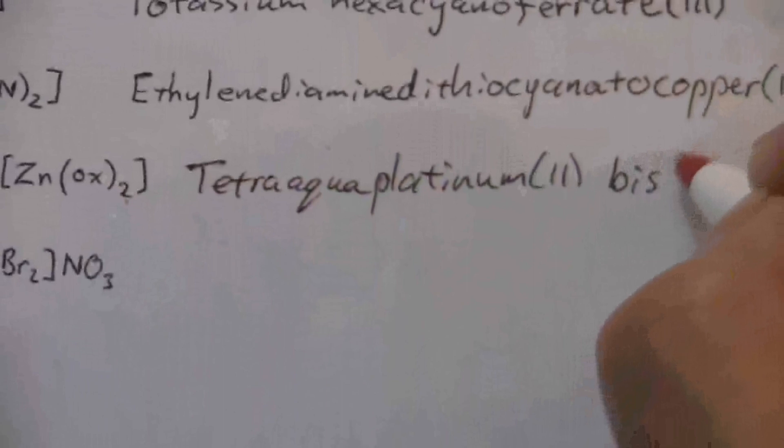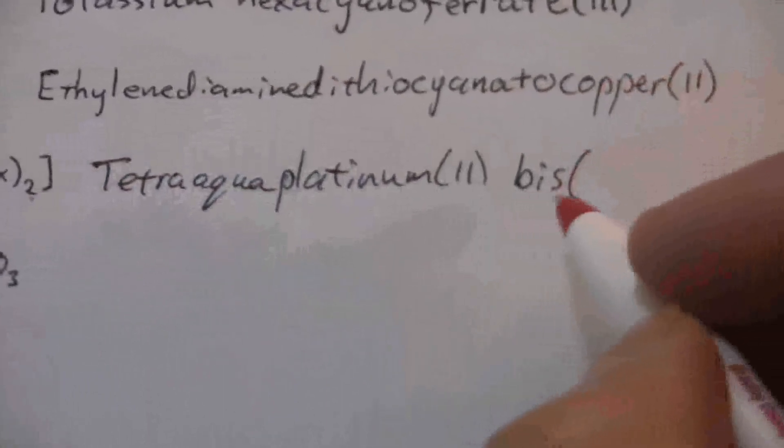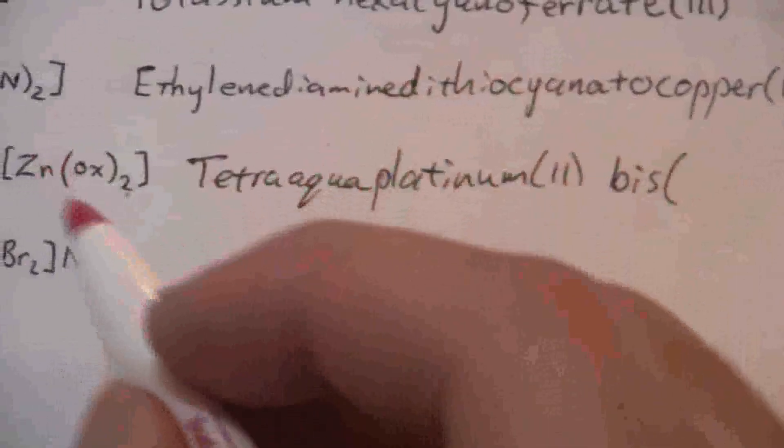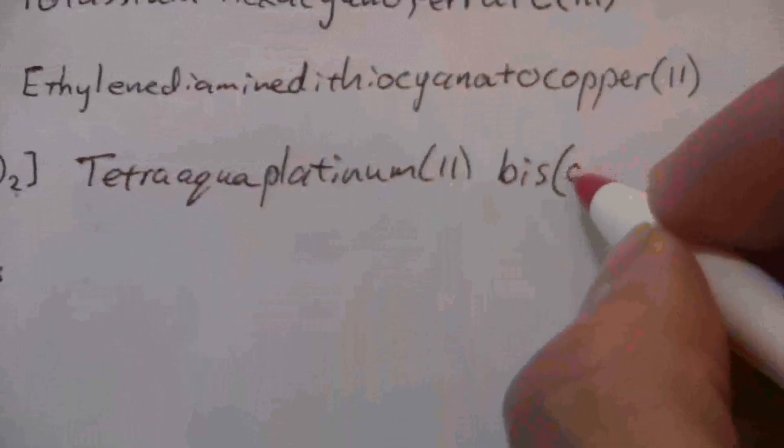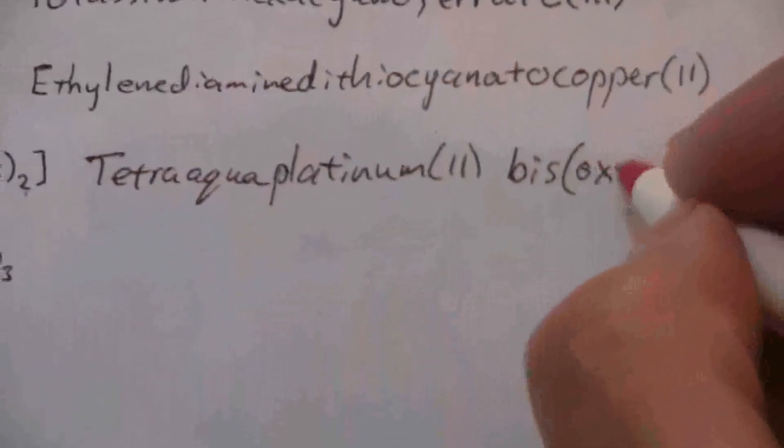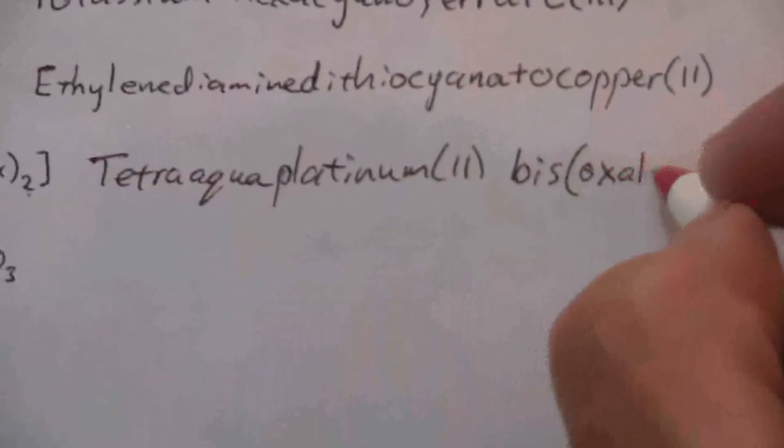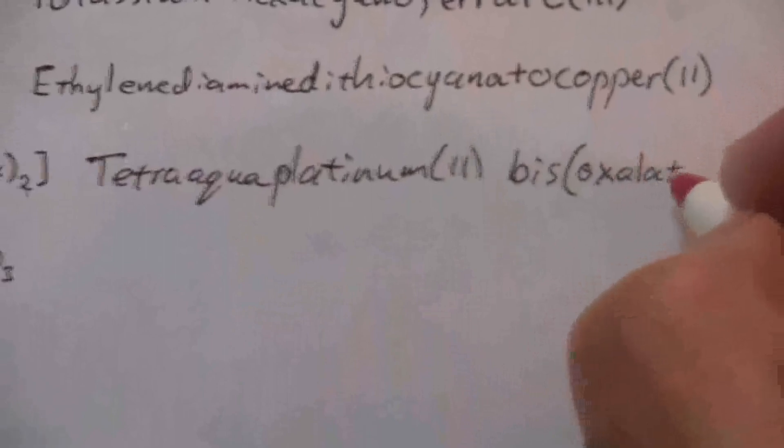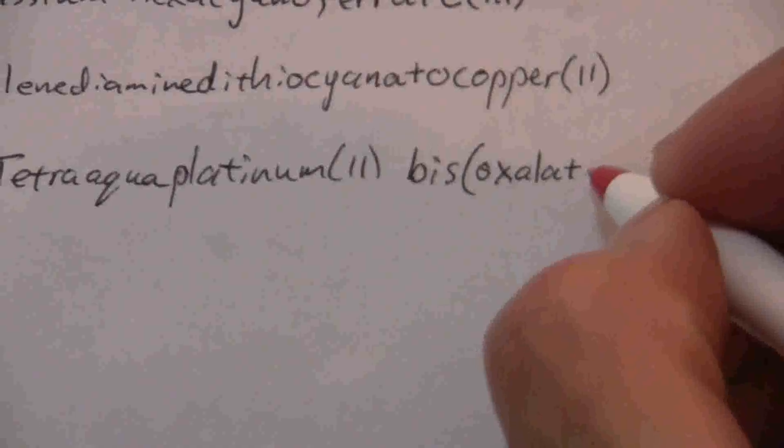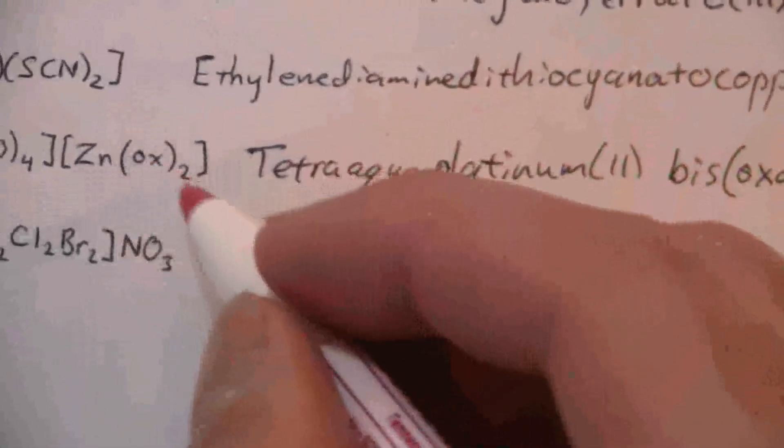So this will be bis, and then in parentheses, whenever we use the altered prefixes, we put the name in parentheses. And then it's oxalate, so it becomes oxalato. So bis, oxalate, zinc two.